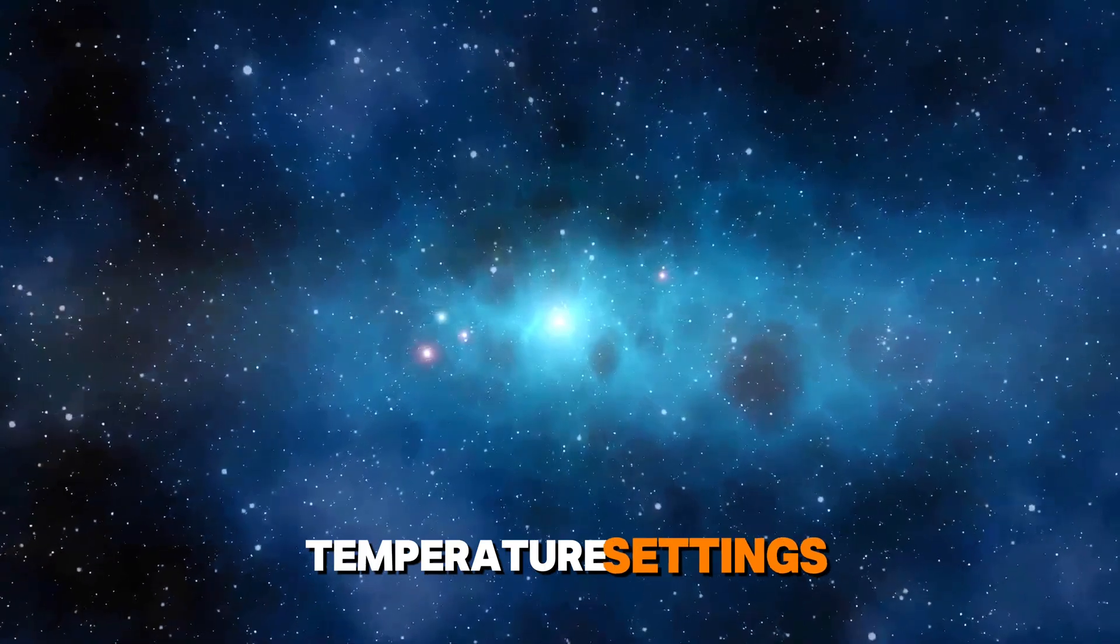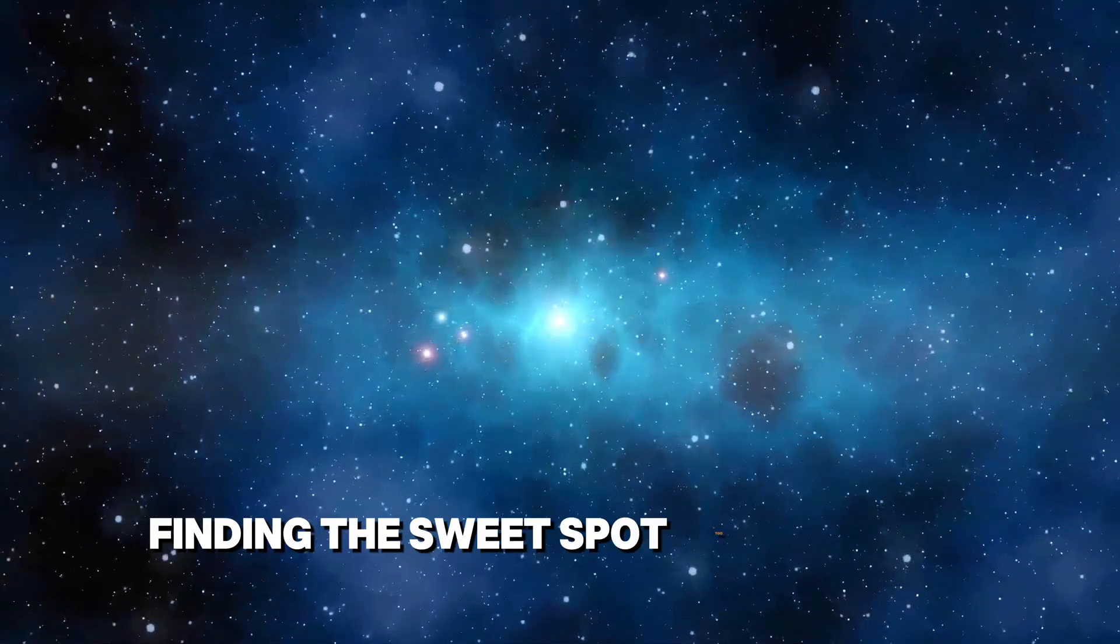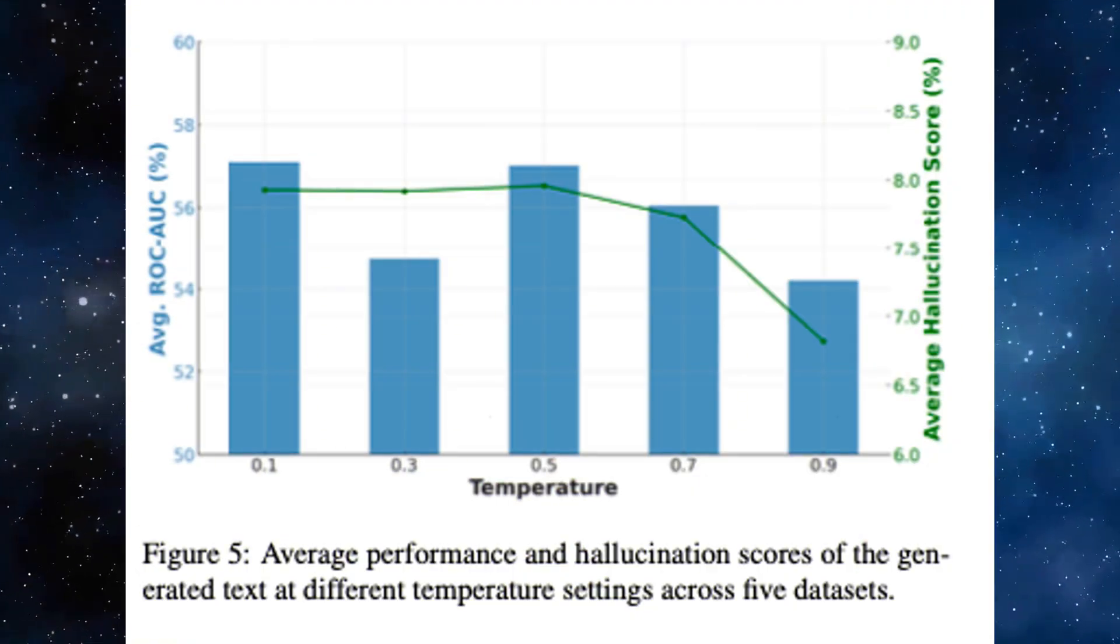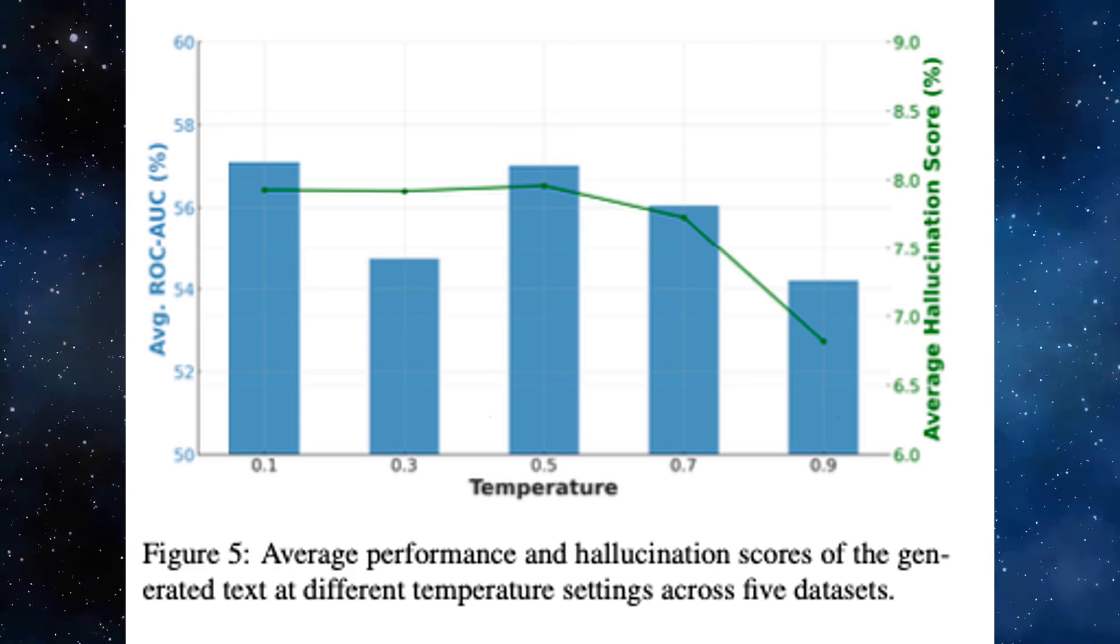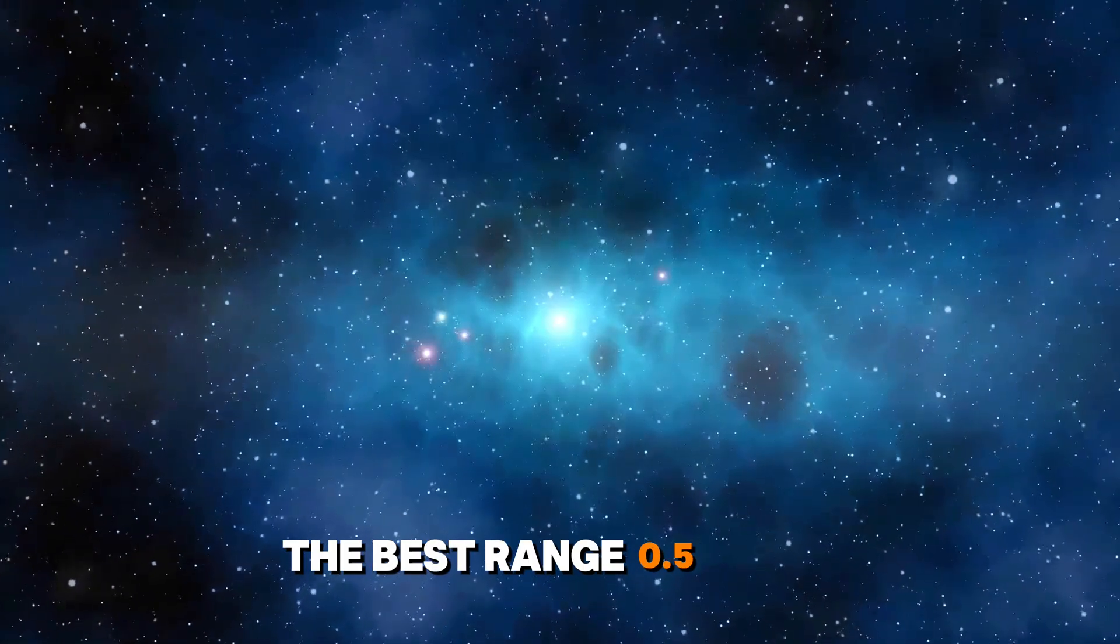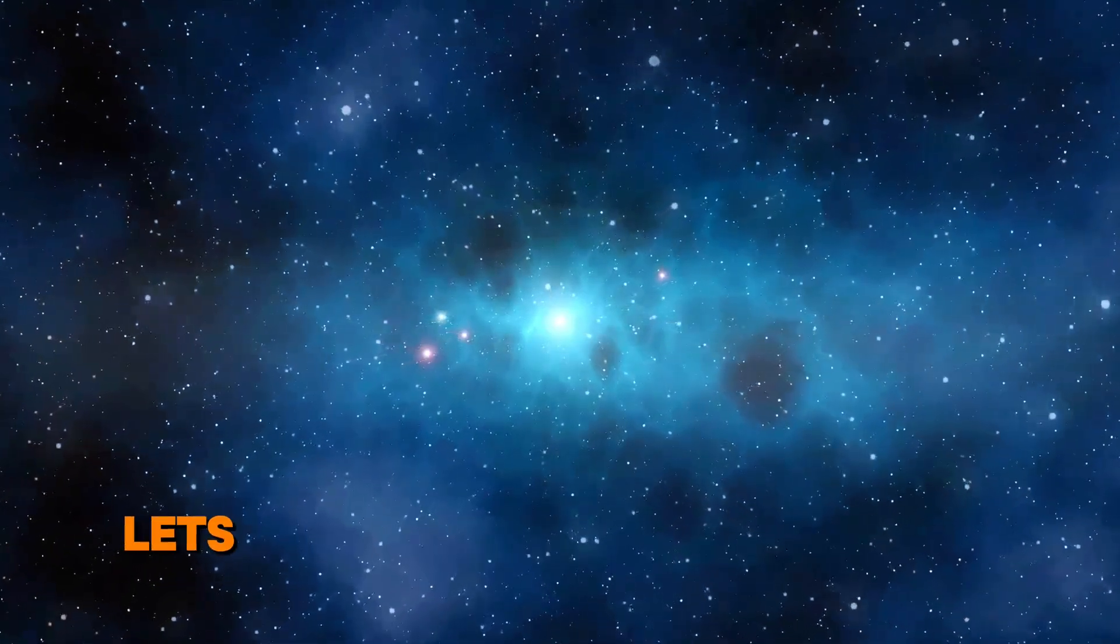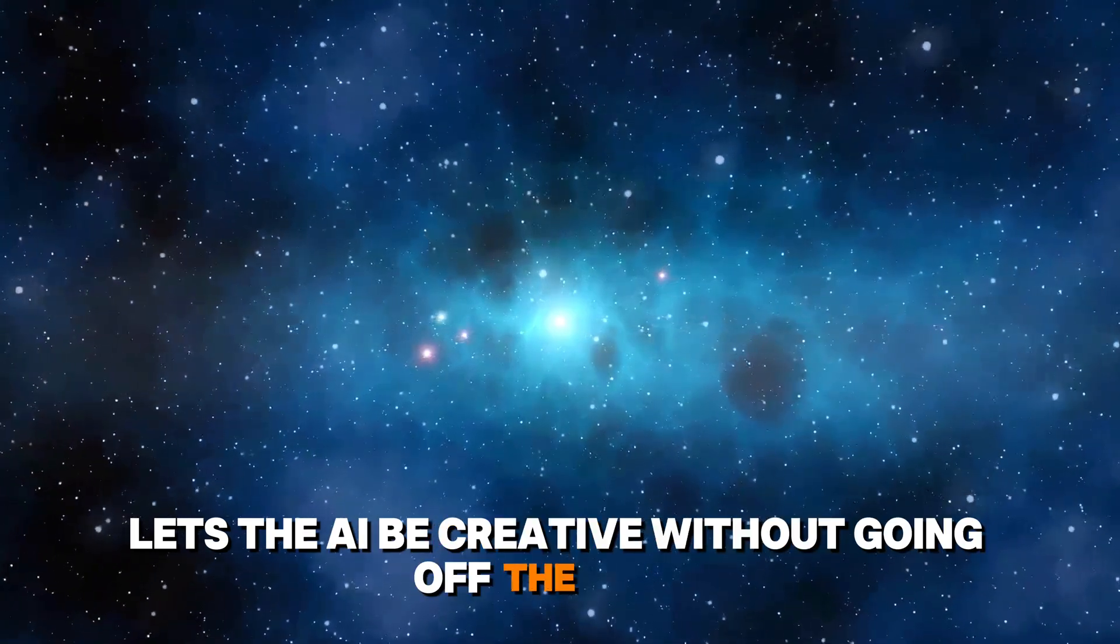Temperature settings, finding the sweet spot. Too low and the AI plays it safe. Too high and the AI goes crazy. The best range, 0.5 to 0.7, lets the AI be creative without going off the rails.